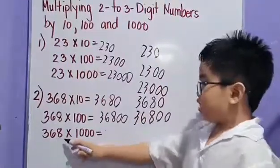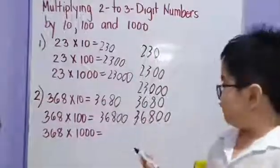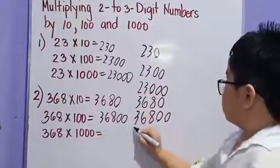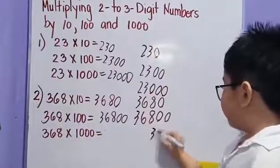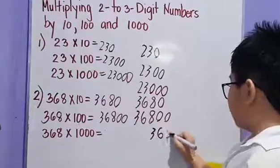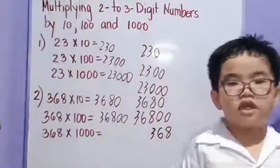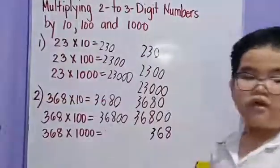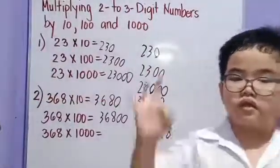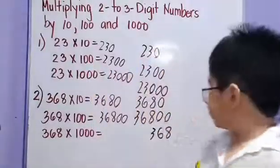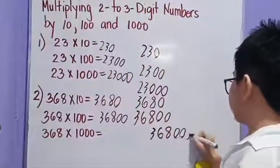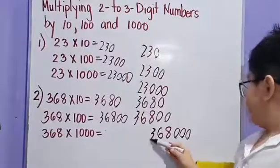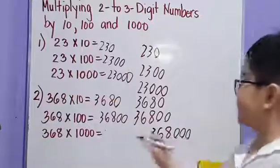Three hundred sixty-eight times one thousand: we have three hundred sixty-eight times one — three hundred sixty-eight. Then let's count how many zeros we have — one, two, three. Then let's write three zeros: one, two, three. We have three hundred sixty-eight thousand.